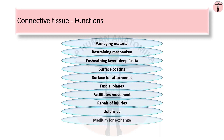It provides a medium for exchange of nutrients and metabolic wastes between cells and blood supply. Connective tissue contains mesenchymal cells of the embryonic type which act as stem cells, capable of differentiating into various types of connective tissue cells with their discrete functions.